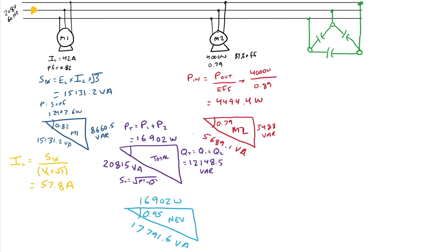Awesome. Now quickly while I'm here, I'm going to turn that into a current. So now my I line after correction. Same thing as before. I'm going to take 17,791.6 divided by 208 volts times root 3. And I will get my new current. So sorry, I don't have that one done. 17,791.6 divided by 208 times square root of 3 gives me 49.4 amps. So I have effectively reduced my incoming line current from 57.8 to 49.4.